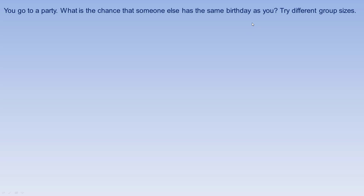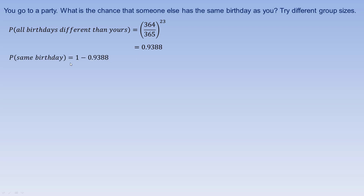Let's say you go to a party. What's the chance that someone else has the same birthday as you, or some other specific person? Let's look at some different group sizes, starting with a group of 23 people. The probability that all the other birthdays are different than yours: there's you, and the probability that the other people all have a birthday different from yours would be 364 over 365 to the power of 23, which is 0.9388. So the probability that someone has the same birthday as you is 1 minus that — just about 6.1%.